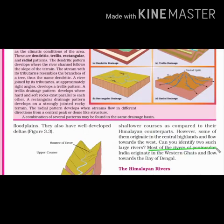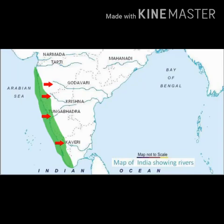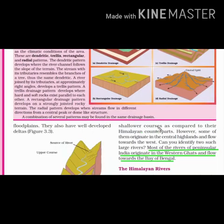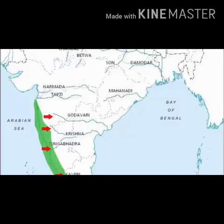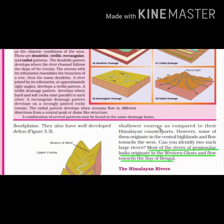Most of the rivers of the peninsular region originate in the Western Ghats and flow towards the Bay of Bengal in the east. This is because of the shape of the landform — the Western Ghats are slightly higher in terms of elevation, and this makes the river flow towards the eastern side. Remember, only Tapti and Narmada are the rivers that drain into the Arabian Sea to the west. The rest all drain into the Bay of Bengal.